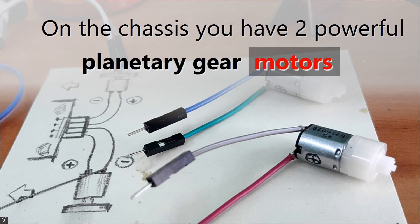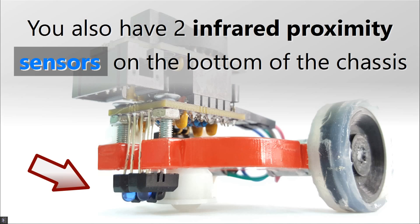On the chassis, you have two powerful planetary gear motors. You also have two infrared proximity sensors on the bottom of the chassis.